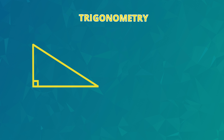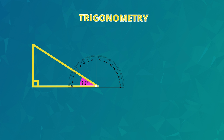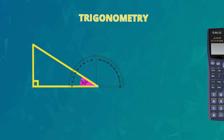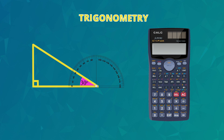Those clever ancient mathematicians recognized that the size of the angle in a right-angled triangle is related to the ratio of the other sides of the triangle. In fact, ancient mathematicians did calculations for every size of angle and for the ratios of the pairs of sides. To make it easier for us, these ratios are available in a table like this, or more easily accessed using just three buttons on a calculator, like this.